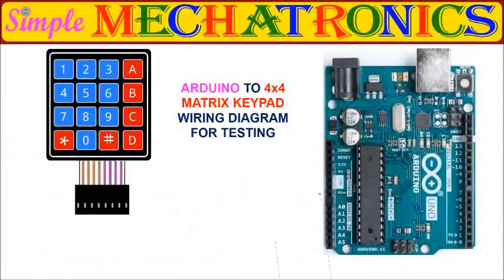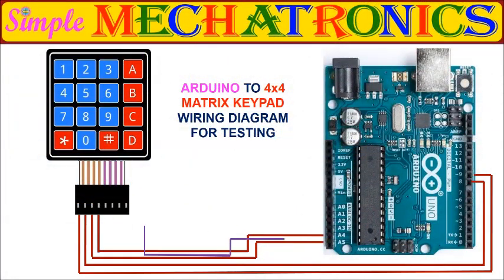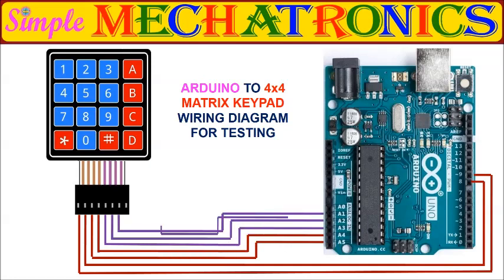This is the typical circuit diagram for testing a matrix keypad. In case of 4 by 3 keypad, column 4 connection to Arduino Uno Pin A0 is absent.